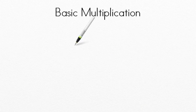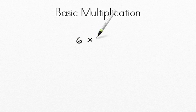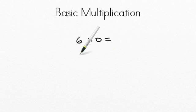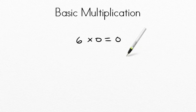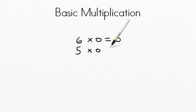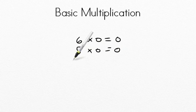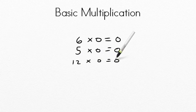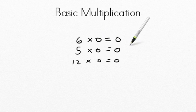Here's a couple of neat tricks about basic multiplication. Say we have six times zero — we have six groups of zero, so there is nothing and the answer has to be zero. Whether it's five times zero, still equals zero because it's five groups of nothing. Twelve times zero, still zero. Whenever you multiply by zero, it is always going to be zero.